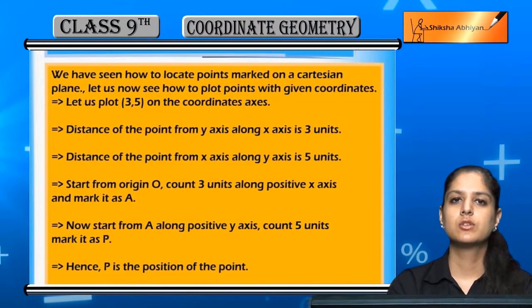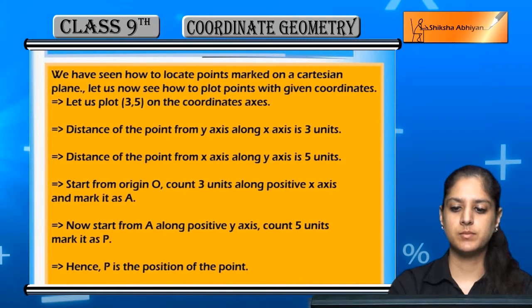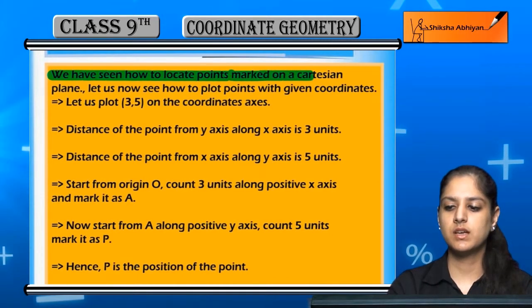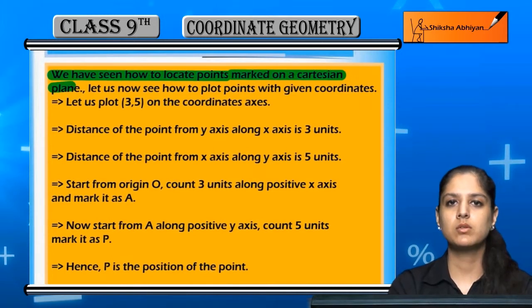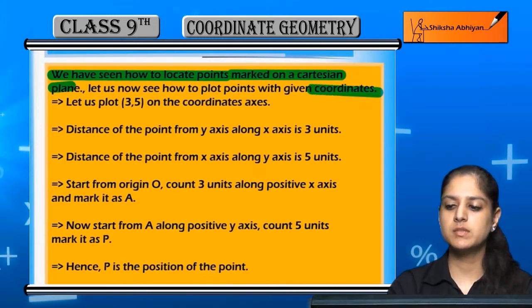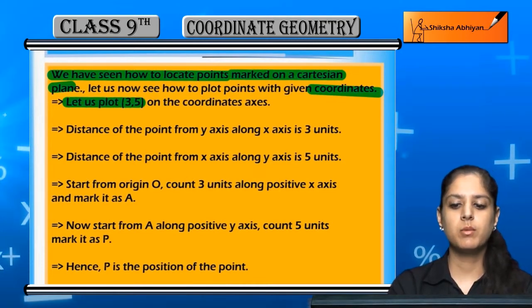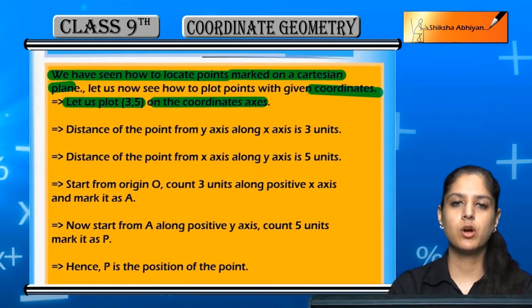Agar coordinates pata hai, usko plane mein plot kaise karte hai. Abhi tak humne yeh dekha ki point ko locate kaise karte hai agar woh Cartesian plane mein mark ho. Ab hum dekhte hai ki agar hame coordinates pata hai toh hum unko plot kaise karte hai.